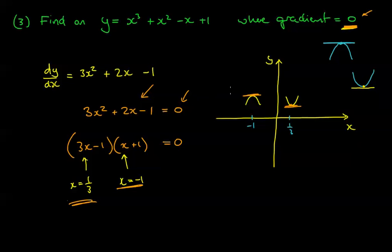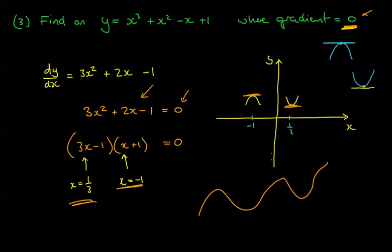Don't be worried if setting your equation to 0 gives a quadratic with two solutions — that can happen. Graphs are curvy and there can be multiple points where the gradient equals the same number.